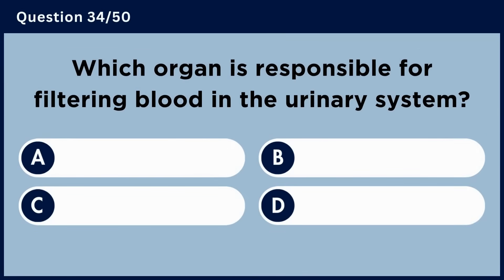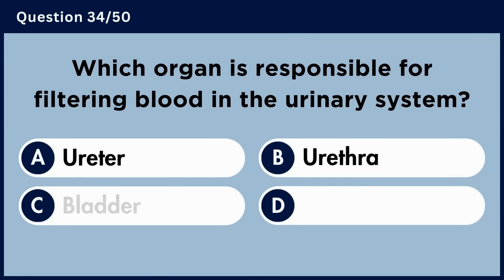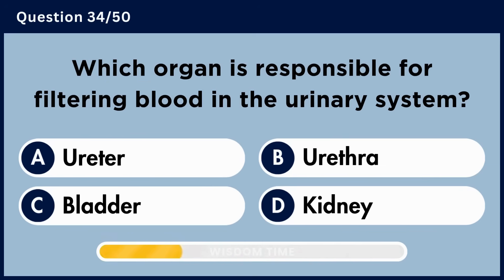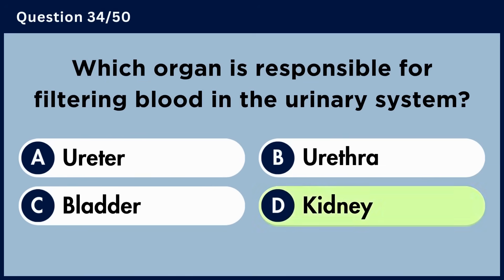Which organ is responsible for filtering blood in the urinary system? Answer D: Kidney.